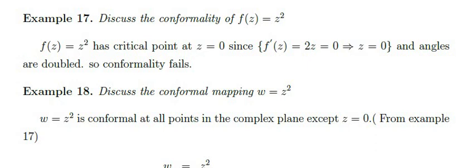Discuss the conformality of f(z) = z². Here f(z) = z² has a critical point at z = 0, because its derivative f'(z) = 2z equals zero when z = 0. Therefore the mapping is not conformal at z = 0.